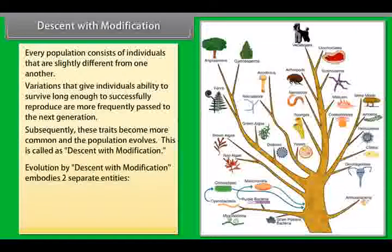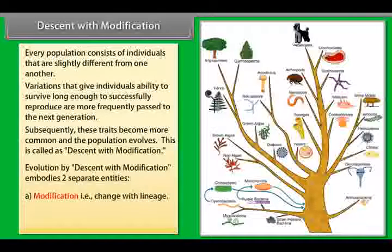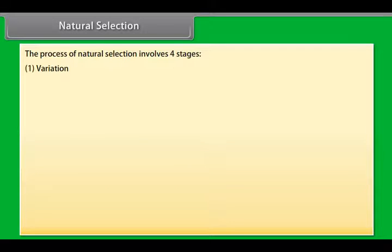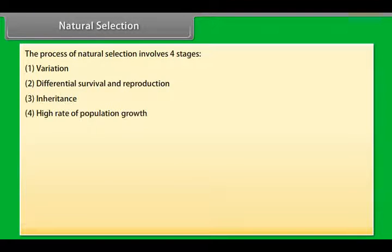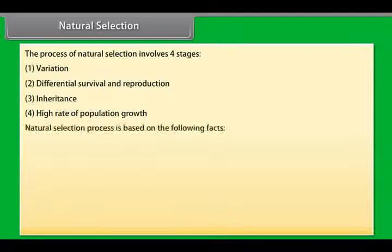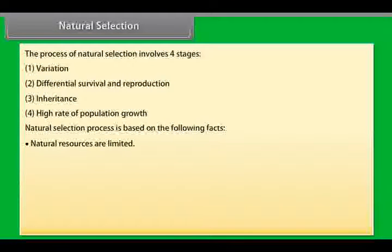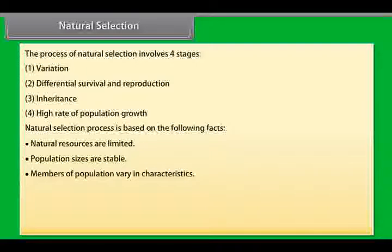Evolution by descent with modification embodies two separate entities: A. Modification — that is, change within a lineage; and B. Natural Selection. The process of natural selection involves four stages: Variation, Differential survival and reproduction, Inheritance, and High rate of population growth. Natural selection is based on facts: natural resources are limited, population sizes are stable, members of a population vary in characteristics, and most variations are inherited.